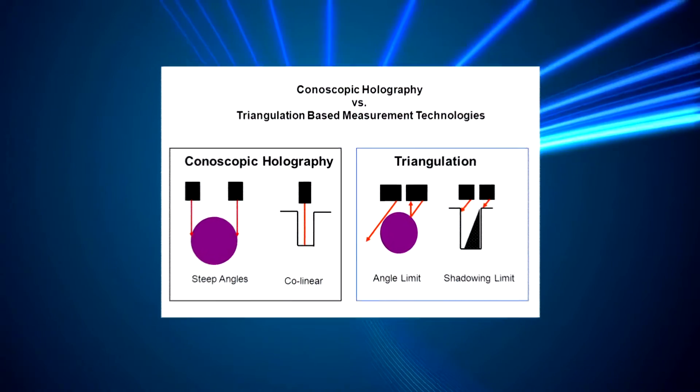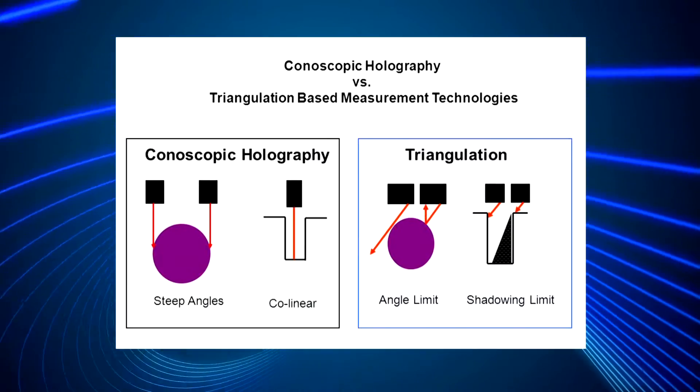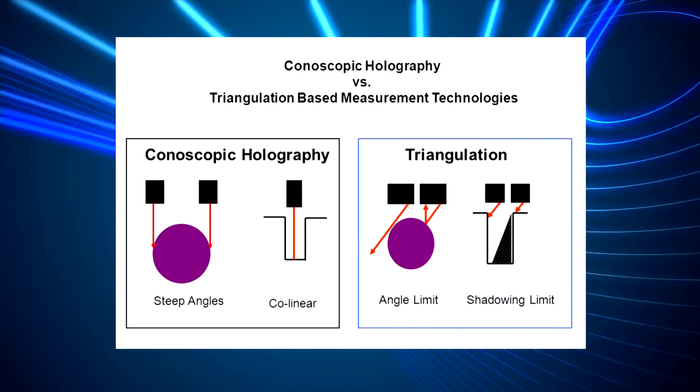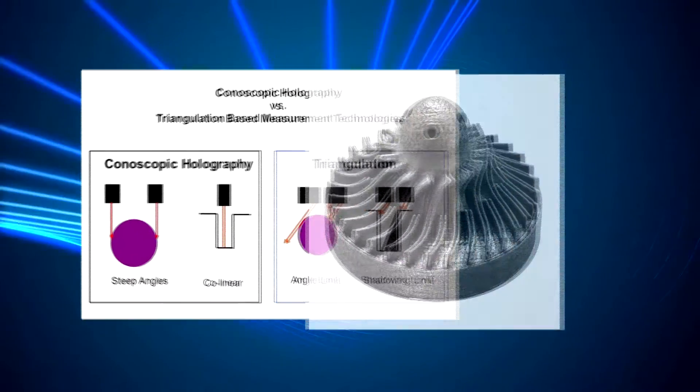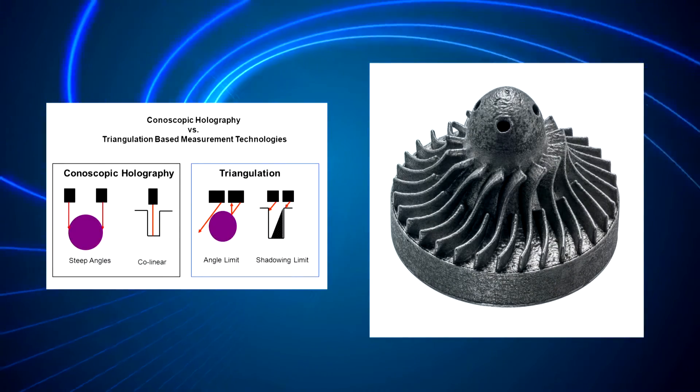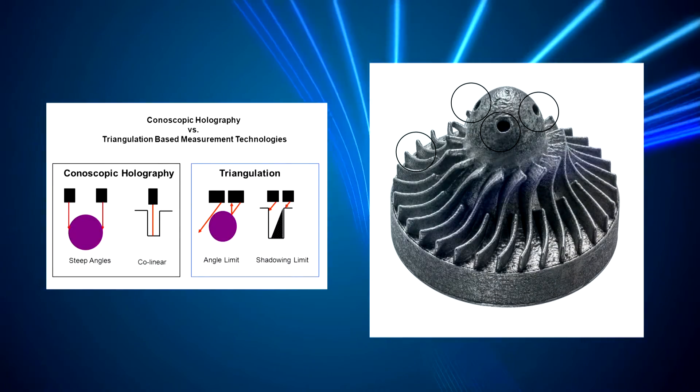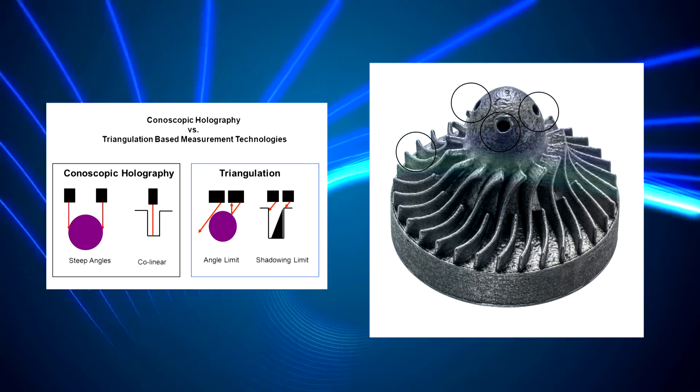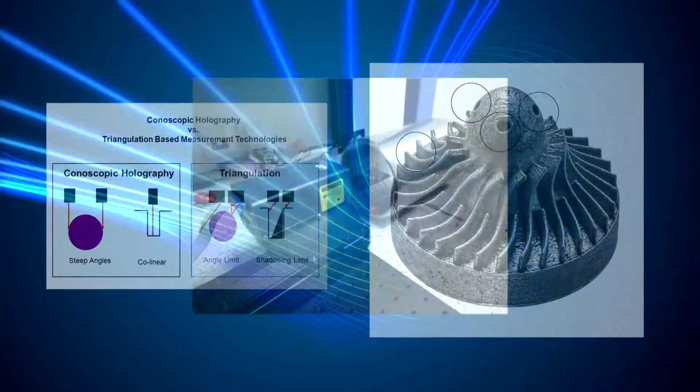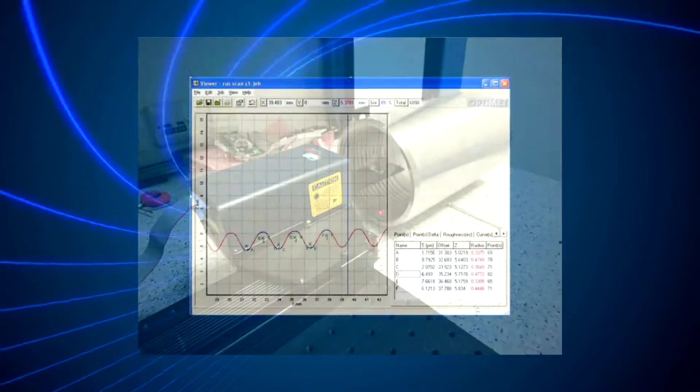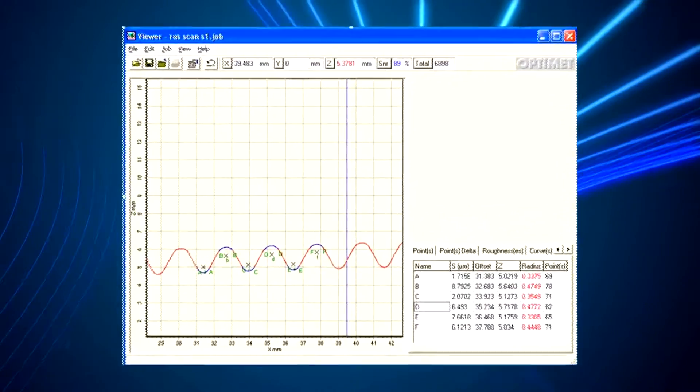The measurement uses a co-linear principle, meaning the beam goes out and returns along the same axis. This enables the measurement of difficult geometries such as inside boreholes or steep angles. It also makes it easy to integrate relay optics, enabling applications such as inspecting the thread pattern inside a pipe.